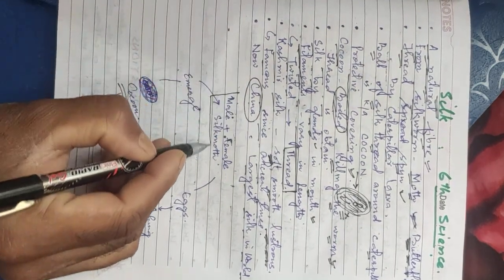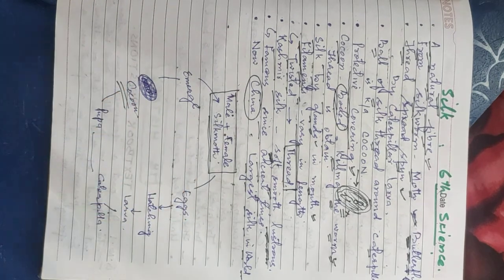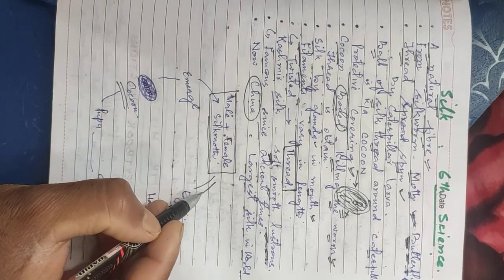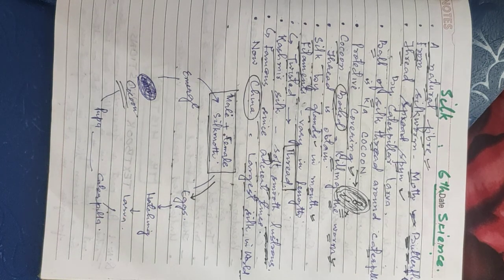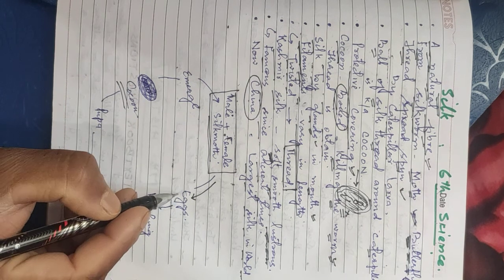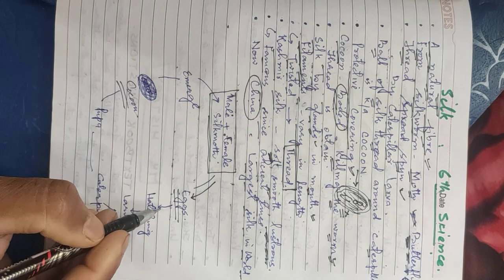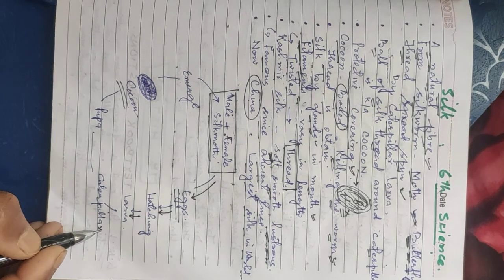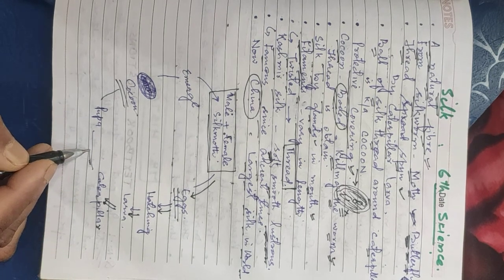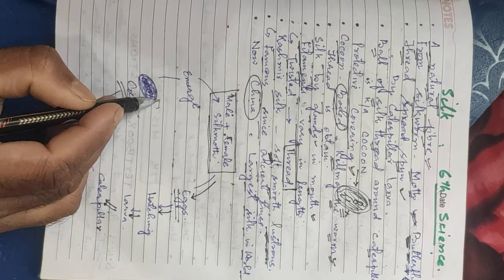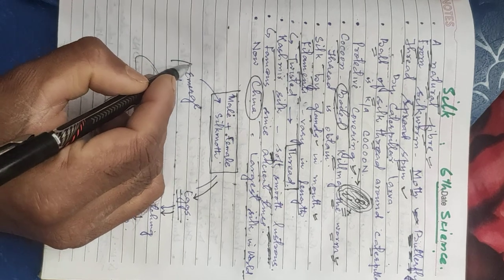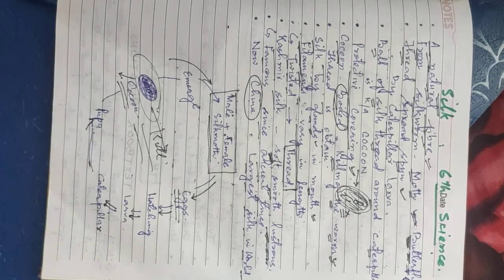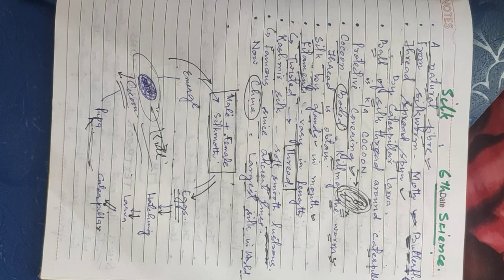Now let us look at the life cycle of the silkworm. There is a male and female silk moth. They mate and the female lays eggs. From the eggs, a caterpillar larva hatches. The caterpillar forms a cocoon around itself. This cycle then repeats — from egg to caterpillar to cocoon and back to moth.